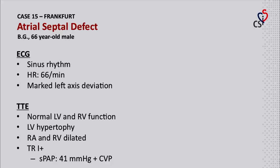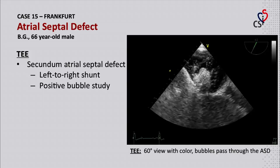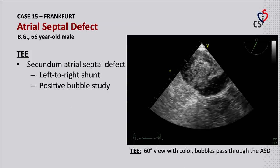ECG showed sinus rhythm with a heart rate of 66 beats per minute and marked left axis deviation. TTE showed normal LV and RV function with left ventricular hypertrophy. The right heart was dilated. Mild tricuspid regurgitation with a systolic pulmonary artery pressure of 41 mmHg was also seen. TEE showed a secundum arterial septal defect with left-right shunt and a positive bubble study.